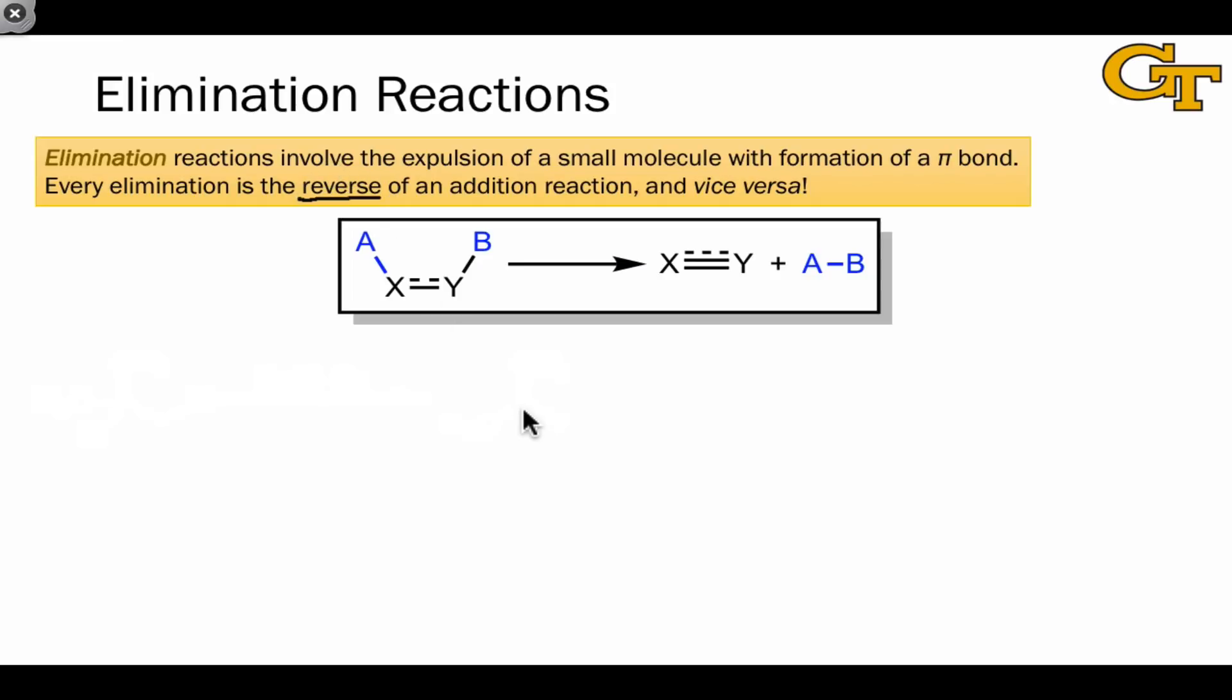And so, in terms of favorability, if an addition process is favorable, the corresponding elimination, which is the reverse of the addition, must be unfavorable thermodynamically, right? Since all the elimination is, is swapping the reactants and products of the addition.